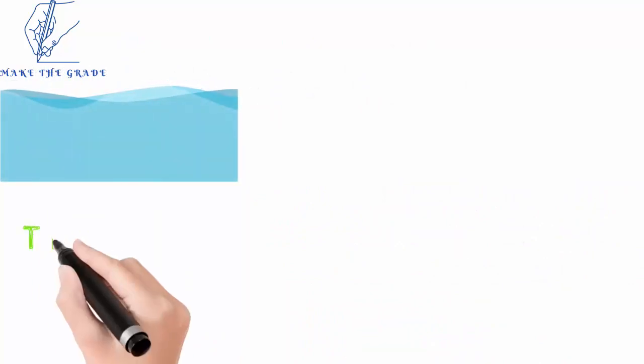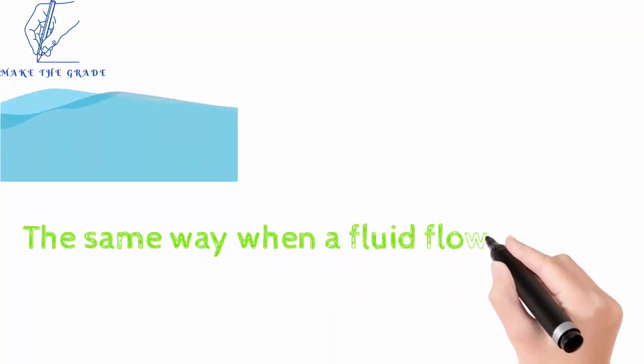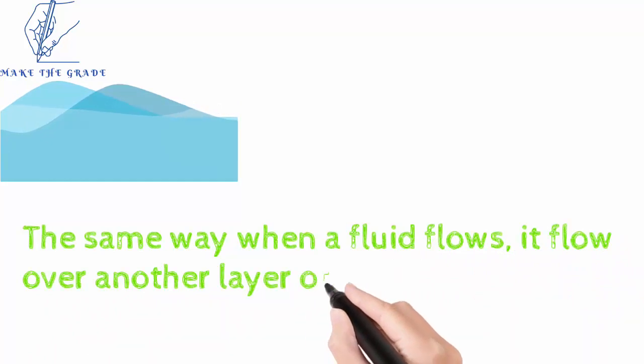In the same way, when a fluid flows, it flows over another fluid layer. We call it a layer of fluid, so there is a fluid layer flowing over another layer of fluid.